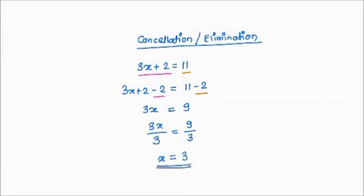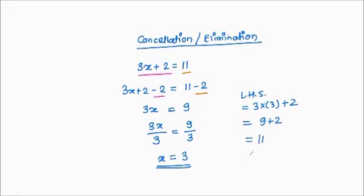Let's put the answer back in our equation to verify. If x = 3, our LHS = 3 × 3 + 2 = 9 + 2 = 11, which equals our RHS of 11. So we got the solution without any trials.